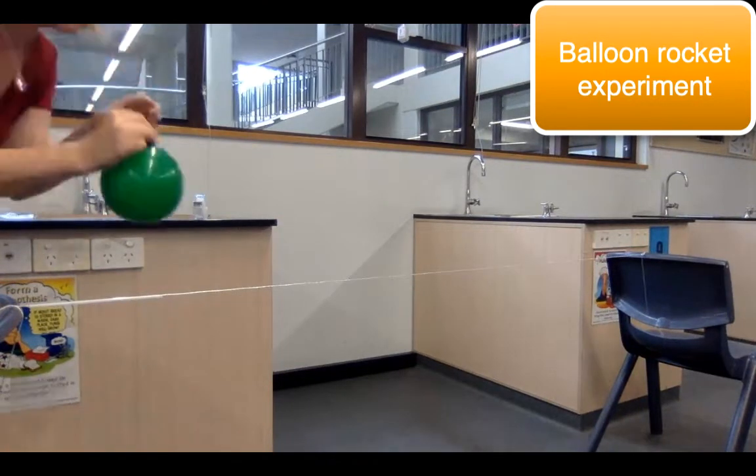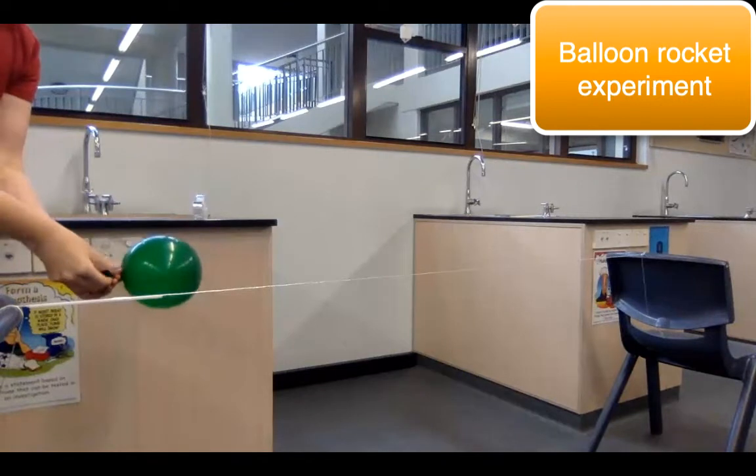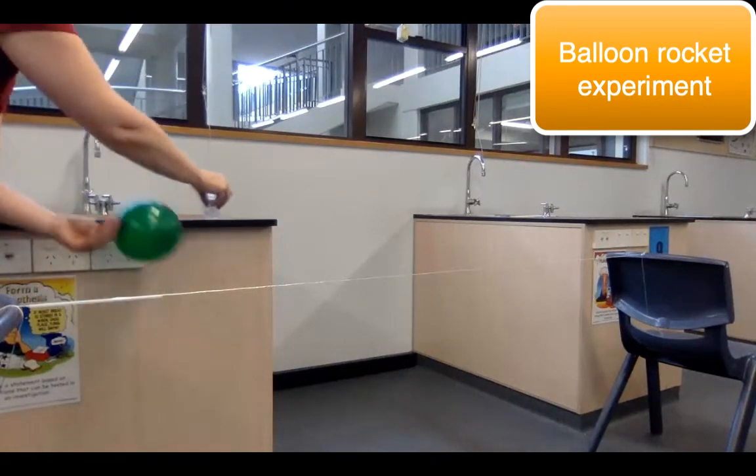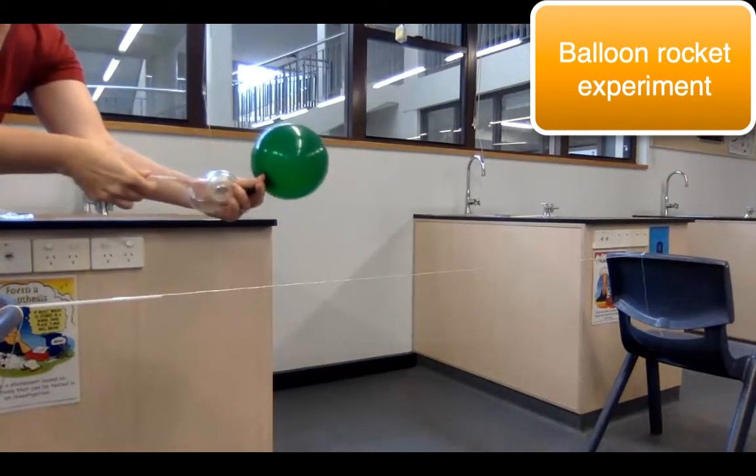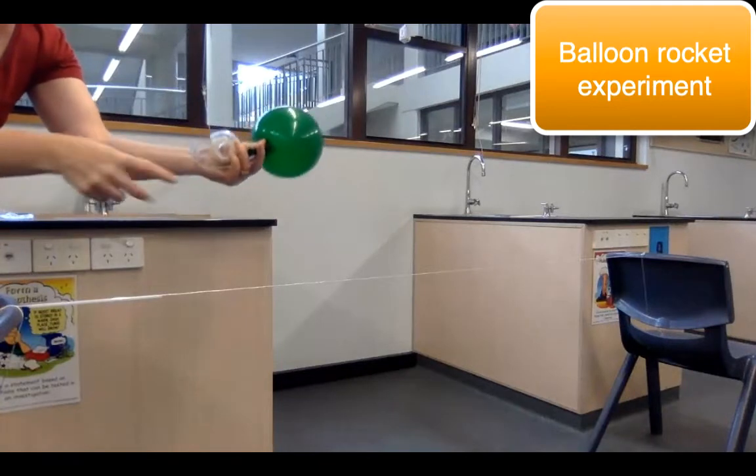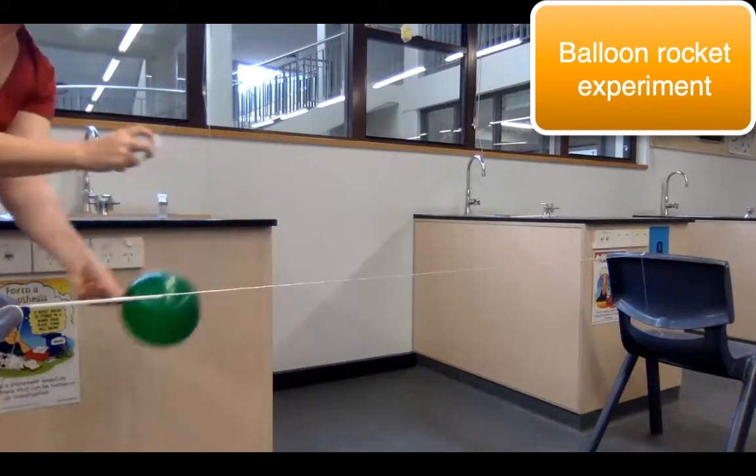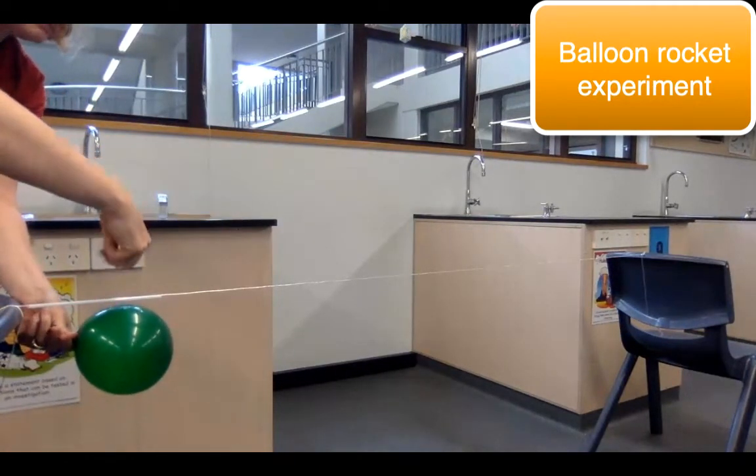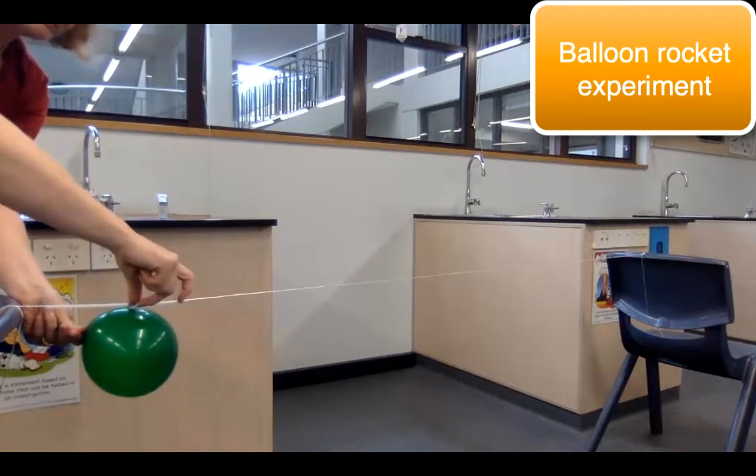The balloon is then going to be secured to the straw using a length of adhesive tape and the adhesive tape needs to be put over the top of the straw. The balloon is underneath the straw and you push it down tight.